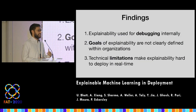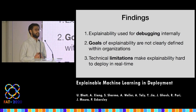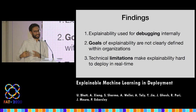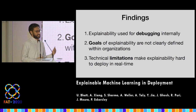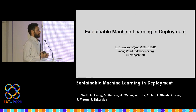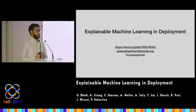So all in all, our three findings were: explainability is primarily used for debugging, the goals of explainability are not clearly defined within organizations, and there are inherent technical limitations to making explainability useful. We suggest everyone cast doubt on those claiming to use these explainability techniques, and work with stakeholders to really understand the purpose of any explanation — do we really need it, and if so, what algorithms can we develop to help stakeholders get the explanations they need? Our paper is available online.